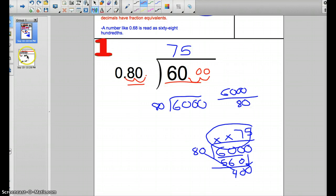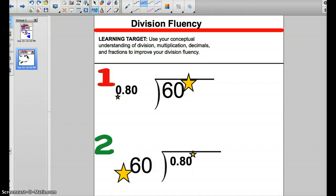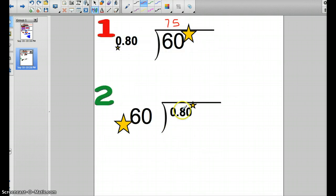The thing I wanted to show you with this is conceptually, think about this: How many times can this really small number that's less than 1, 0.80, go into 60? A lot of times, more than 60 times. In fact, we found it goes into it 75 times. But let's ask ourselves this question: How many times can this large number, 60, go into 0.80? This is less than 1. Can 60 even go into 1? No, it can't.